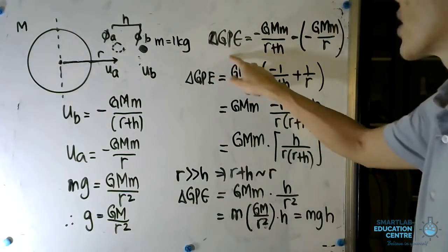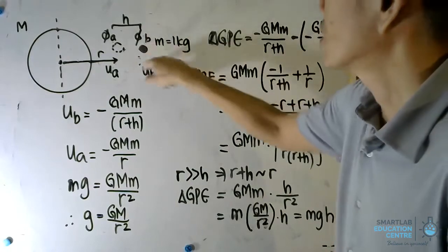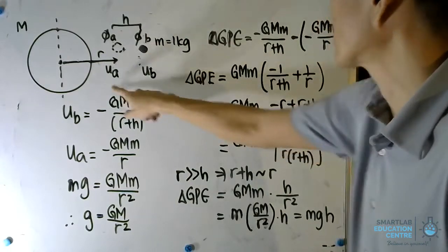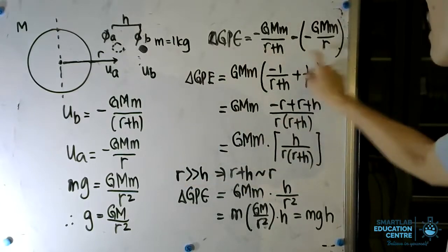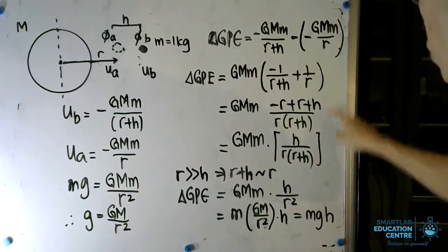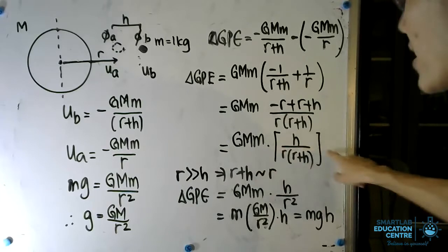In terms of the change of the potential energy, we'll be taking UB minus UA. Mathematically, if you work through the math, you will end up with this expression.